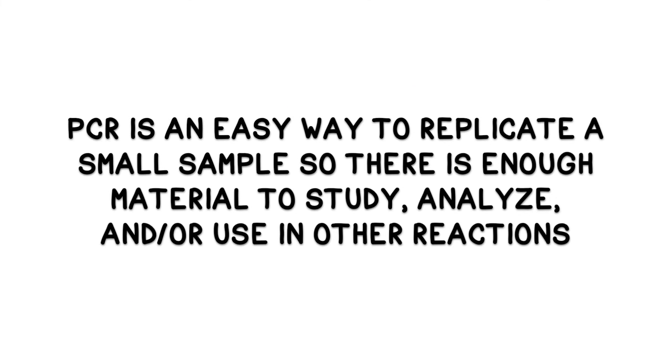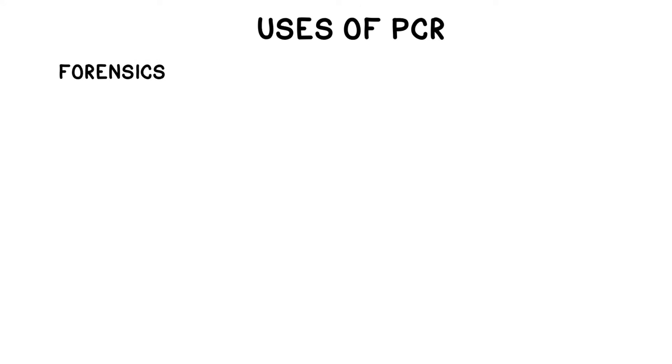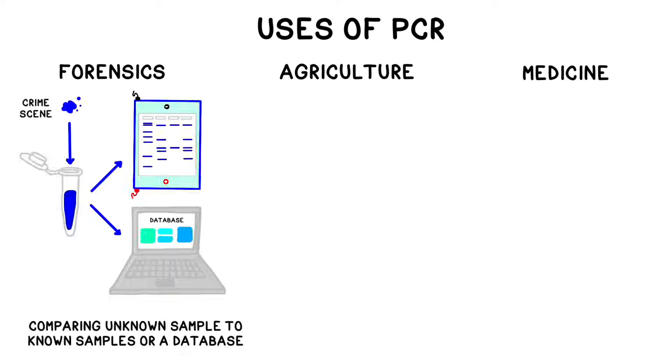PCR is an easy way to replicate a small sample so there is enough to study, analyze, or use in other reactions. PCR is used in many industries, but the most familiar are likely forensics, agriculture, and medicine. In forensics, PCR can be used to amplify genetic material from an unknown source so that it can be compared to a particular suspect or to a large DNA database. DNA evidence is now routinely used to solve crimes.